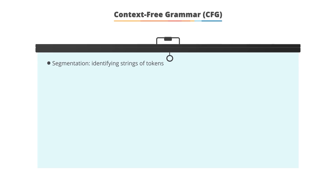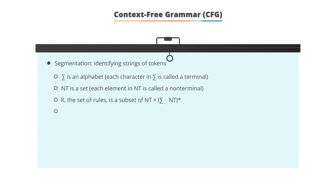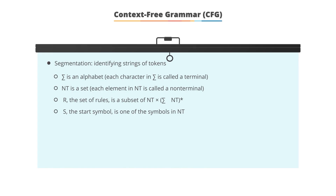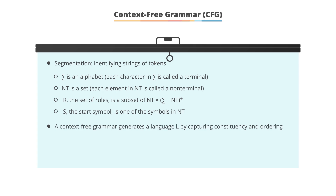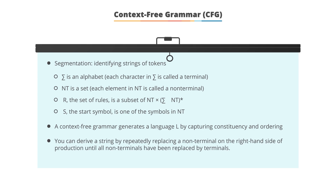A context-free grammar (CFG) is a four-tuple (Σ, NT, R, S) where Σ is an alphabet of terminals, NT is a set of non-terminals, R is a set of rules that is a subset of NT times the set of strings over Σ and NT, and S is the start symbol. A CFG generates a language L capturing constituency and ordering. The start symbol is used to derive the string by repeatedly replacing a non-terminal on the right-hand side of the production until all non-terminals have been replaced by terminal symbols.